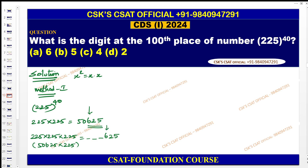Even if you multiply four times or five times, you still get 6 in the hundreds place. The question focuses on the hundreds place, so you can simply answer: the hundreds place digit is 6. That is Method 1.